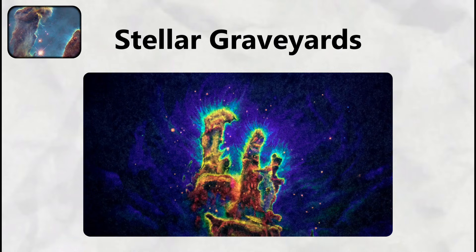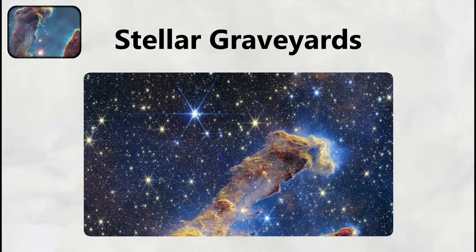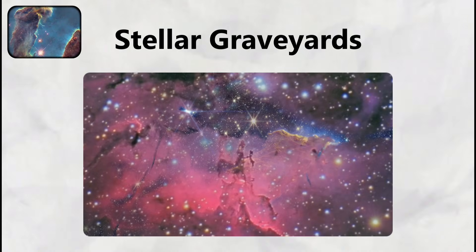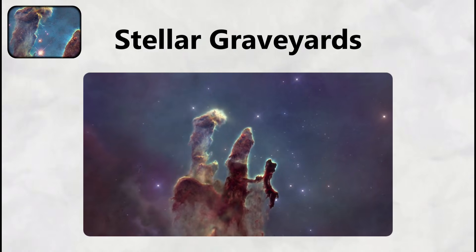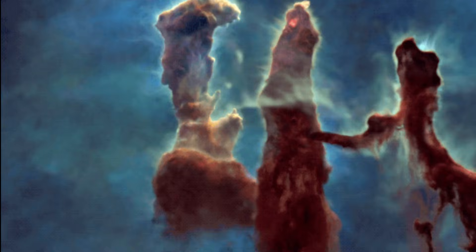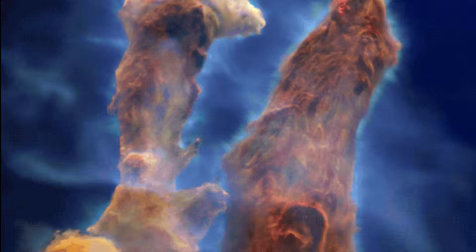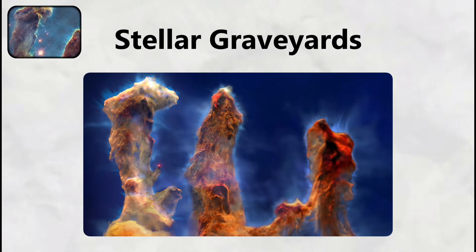The pillars of creation in the Eagle Nebula represent one of space's most deceptive objects, appearing beautiful in photographs while actually serving as a cosmic graveyard where stars are born and die in violent processes. Located 6,500 light years from Earth, these towering columns of gas and dust stretch approximately four to five light years in height, making them larger than the distance from our sun to the nearest star.